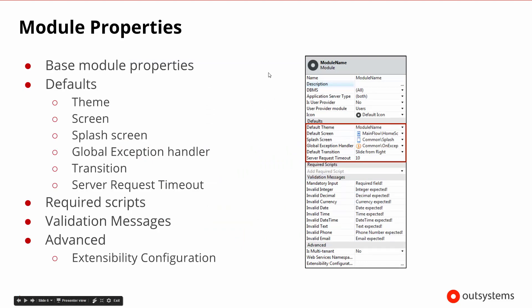Once Service Studio opens and we begin to look at our module, there are a bunch of defaults inside of the module that help define its look and feel and the way it's going to behave. The theme gets the exact same name as the module. It has a default screen — the home screen in the main flow — a splash screen in the common flow, and an exception handler in the common flow.